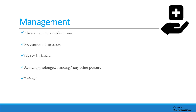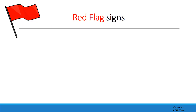One must always rule out a cardiac cause, otherwise the patient might not improve. For common autonomic or neurocardiogenic syncope, stress prevention of stressors: avoid caffeine and dehydration, avoid skipping breakfast, avoid late nights, avoid prolonged standing, and refer to a pediatric cardiologist whenever deemed essential.